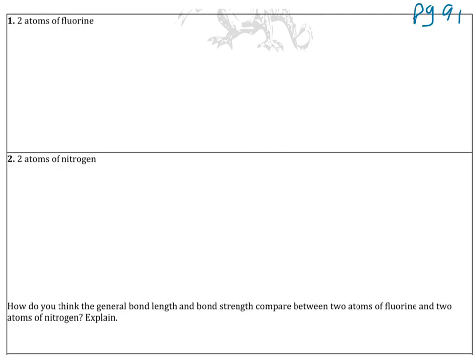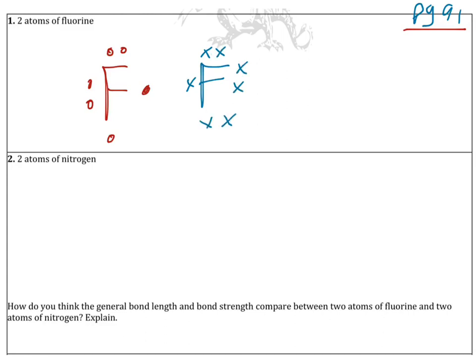Now let's move on to covalent compounds, which are the practice problems on page 91. Unlike ionic compounds which transfer electrons, covalent compounds share electrons. If we have a fluorine atom with seven valence electrons and another fluorine atom also with seven valence electrons, each one wants to gain an electron — but one fluorine will not give the other one an electron. So what ends up happening is they share their electrons.